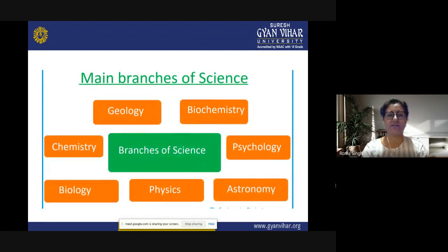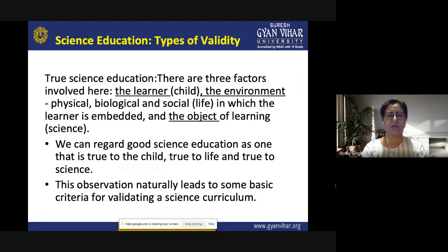The main branches of science studied at the school level include geology, biochemistry, psychology, astronomy, physics, biology, and chemistry. For true science education, three factors are involved: the learner (the child or student), the environment — physical, biological, or social — in which the learner is embedded, and the object of learning, which is science. Good science education is true to the child, true to life, and true to science. This naturally leads to basic criteria for validating a science curriculum.